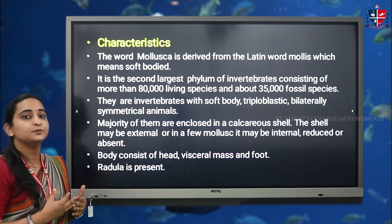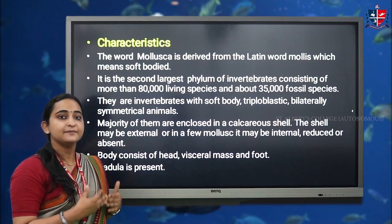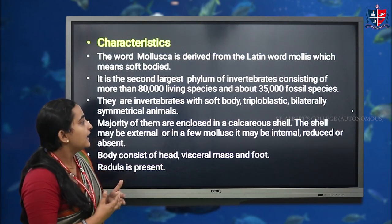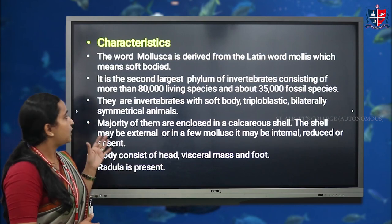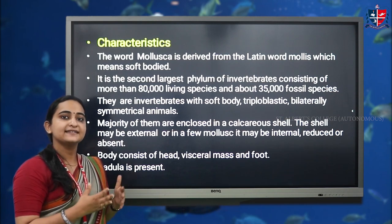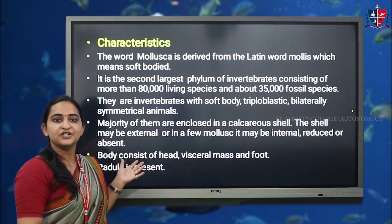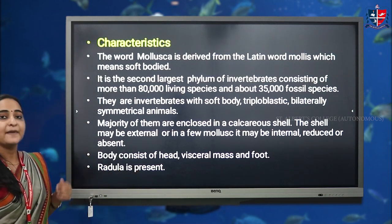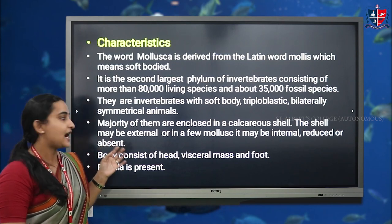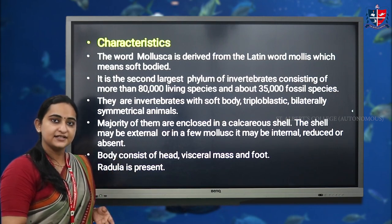Animals coming under phylum Mollusca are soft-bodied and they are triploblastic. Triploblastic means their body is derived from three embryonic layers — mesoderm, ectoderm, and endoderm. Their body is bilaterally symmetrical, meaning their body is divided into two equal halves. Majority of animals coming under phylum Mollusca are enclosed in a calcareous shell.